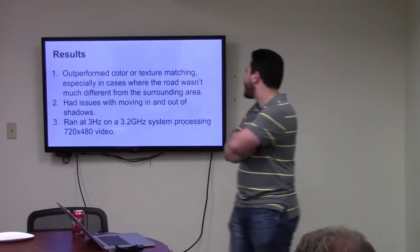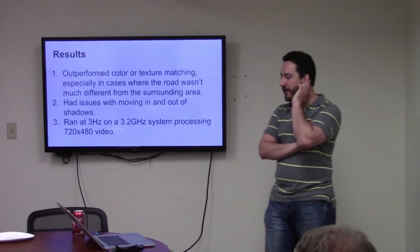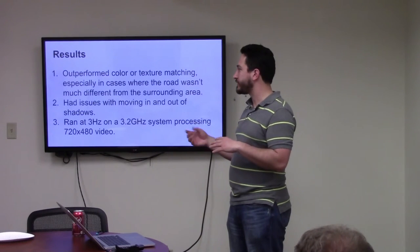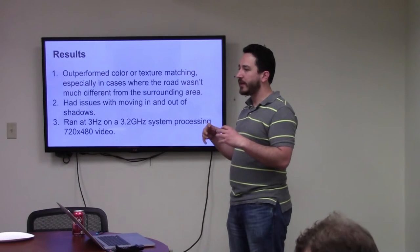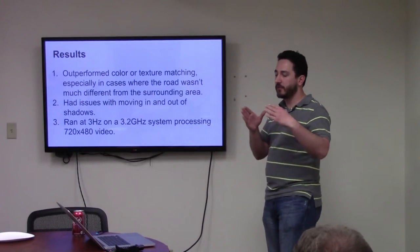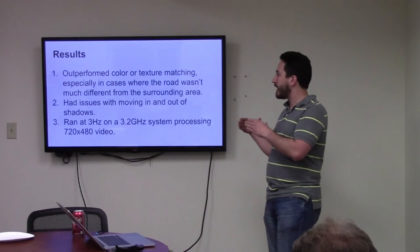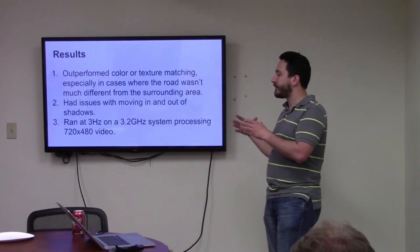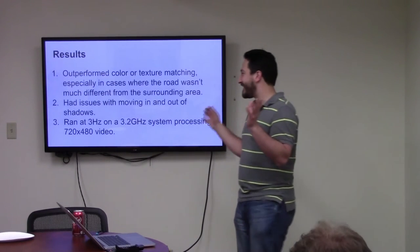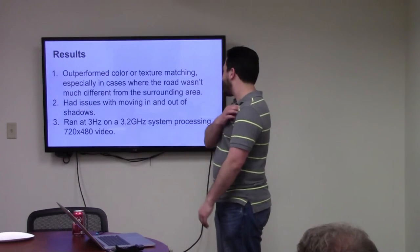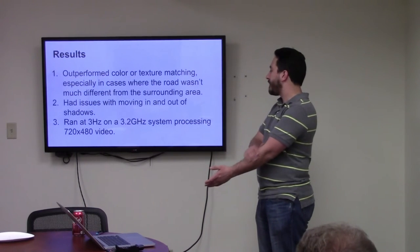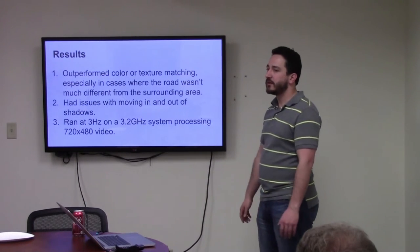The results were that it outperformed the color and the texture matching. In fact, what they actually did was to make sure that this thing was better than other approaches. They actually went and implemented a color matching approach similar to what I talked about early on. And a texture matching approach. And ran those against the same desert, the same videos of desert that they did for this one. And what they found out was the color matching one was really good for finding where the road was. But it was also really good for finding everything else. Because everything is the same color in the desert.